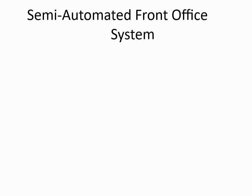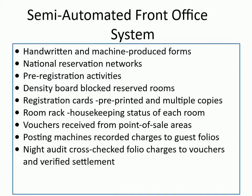The semi-automated front office system uses both handwritten and machine-produced forms, national reservation networks, pre-registration activities, density board for blocked and reserved rooms, pre-printed registration cards with multiple copies, room rack, vouchers from point-of-sale areas, a posting machine to record charges to guest folios, and night audit cross-checking folio charges to vouchers and verifying settlement.